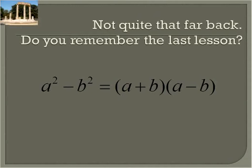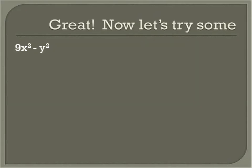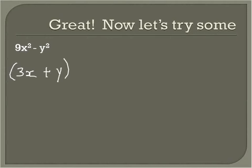We're going to take that to a slightly different level today with a little bit more challenging questions. In this one we have a coefficient and exponents, but both are perfect squares. 9x squared — if you take the square root of 9x squared, you get 3x. And we take the square root of y squared, which gives us y. Then we do the square root of the first term minus the square root of the second term.